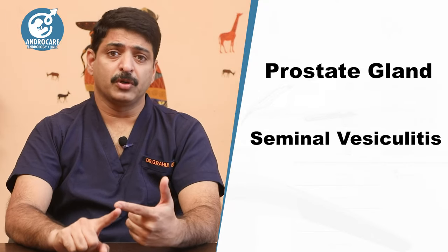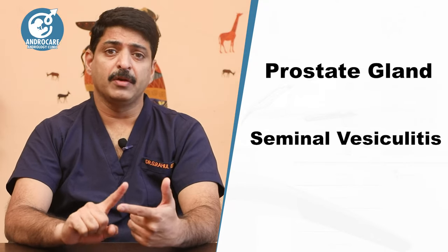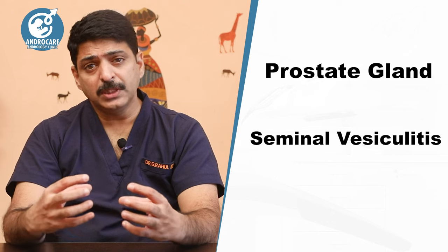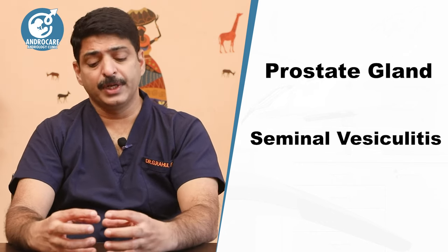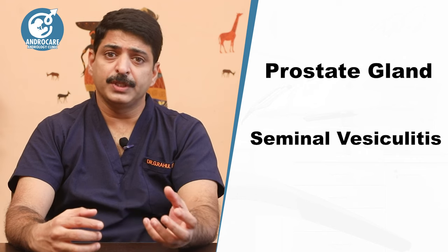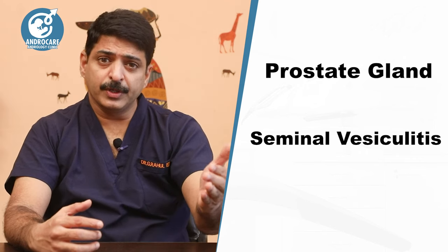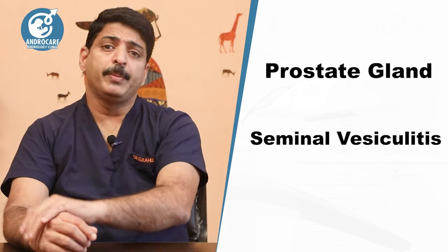The third and common cause of penile pain is infection in the prostate gland or seminal vesicle. Because all the penile nerves travel close to the prostate gland, prostate infection can cause penile pain. This pain can be at the tip of the penis, at the bottom of the penis, or sometimes a pricking sensation all over the penis.